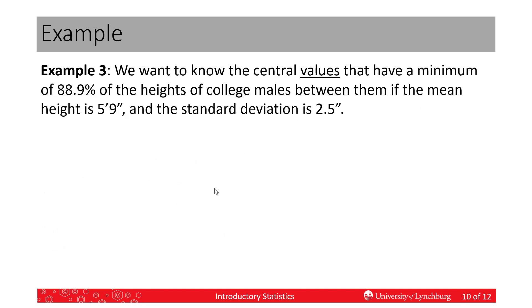Now, let's look at the other type of problem we can do with Chebyshev's. Let's say I know the mean, I know the standard deviation, and I want to know the values that are the same number of standard deviations on either side of the mean. That's why I've said central values here. That have a minimum of 88.9% of the heights of college males between these values.